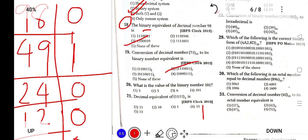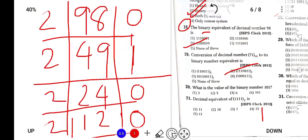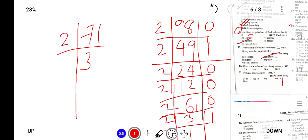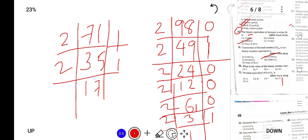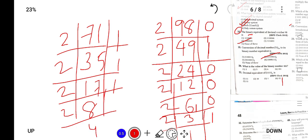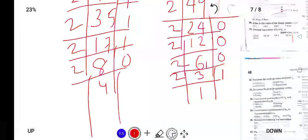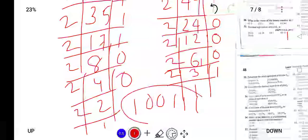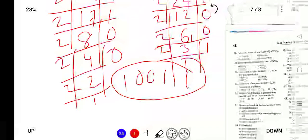Question 19: the conversion of decimal 71 to binary. Solve like this: 71 divided by 2 — remainder 1; 35 divided by 2 — remainder 1; 17 divided by 2 — remainder 1; 8 divided by 2 — remainder 0; 4 divided by 2 — remainder 0; 2 divided by 2 — remainder 0; 1 divided by 2 — remainder 1. Reading from bottom up: 1 0 0 0 1 1 1.